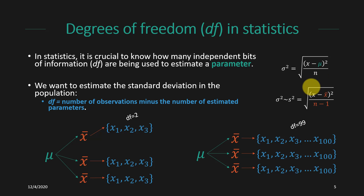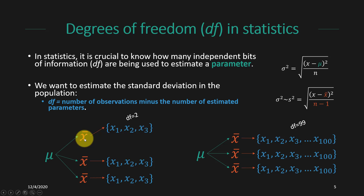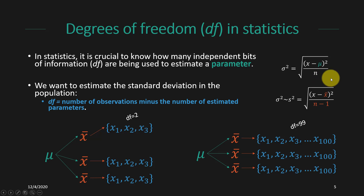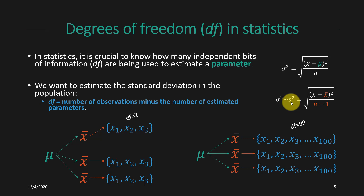Depending on how many data points I have, my degrees of freedom are going to change. With three observations, I have to estimate mu using x-bar, so I have three minus one — two degrees of freedom. With a hundred observations, I still estimate a single parameter mu using x-bar, so I have one hundred minus one, which is 99 degrees of freedom.